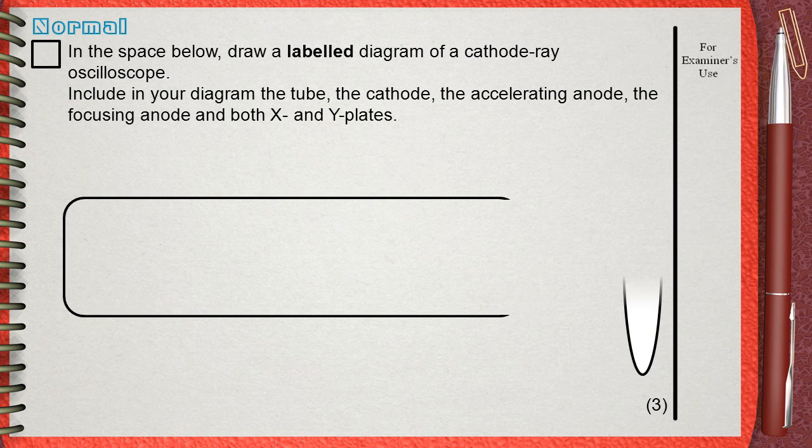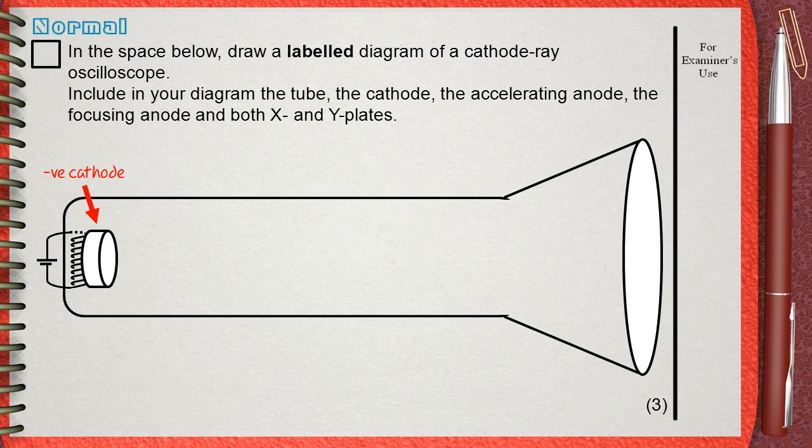This is the shape of the tube of the CRO. First thing you start with the cathode, which is negative. Behind the cathode, there must be the heater filament, which will heat the cathode for thermionic emission.